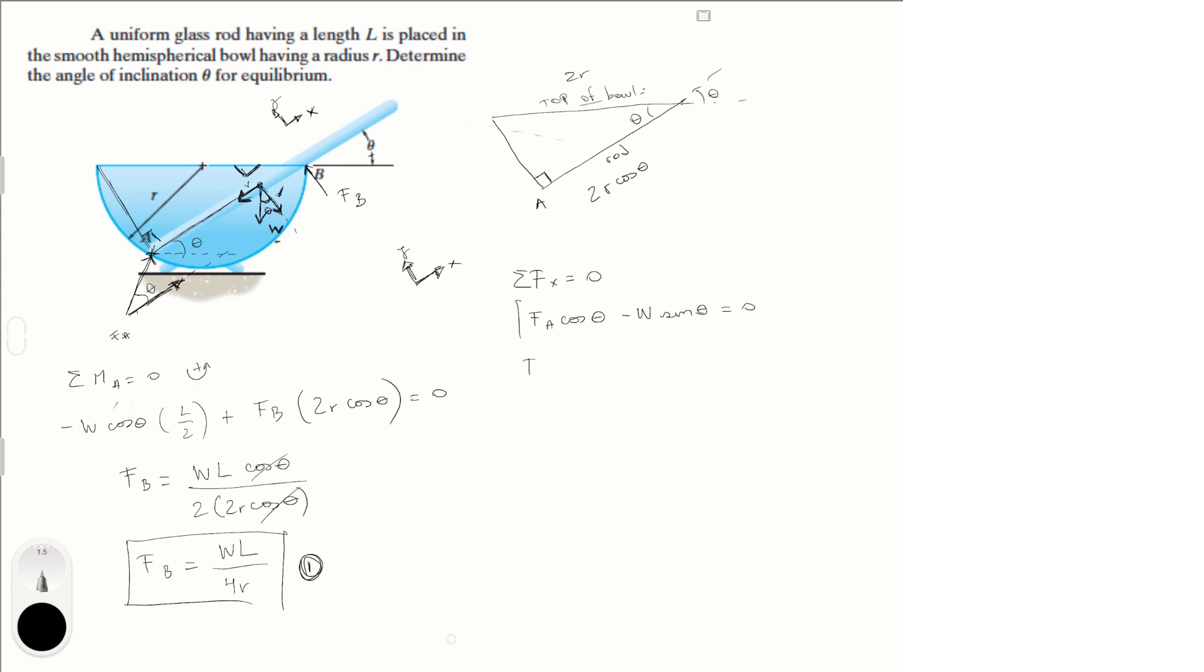Now we're going to solve this for F of A. F of A is equal to W sine of theta over cosine of theta. We're going to call this equation 2.